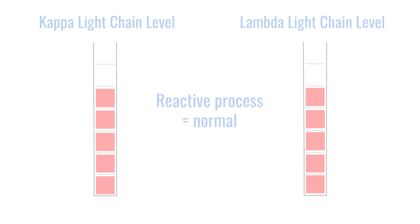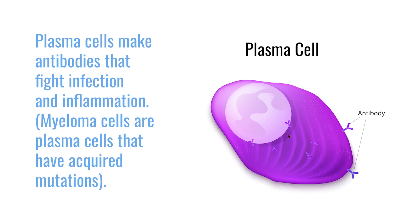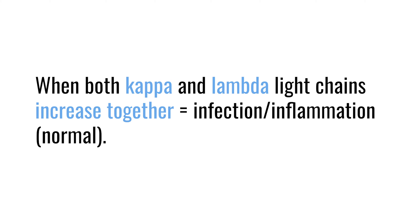Myeloma cells come from an abnormal plasma cell, and a plasma cell is very important for our immune system. It's going to react whenever we have an infection or are exposed to an agent like an allergen or inflammation. Its behavior is to increase the amount of antibodies it produces to try to identify bacteria or pathogens attacking the body. And just like it produces whole antibodies, it also produces fragments of those antibodies, which are the free light chains. So if we see both light chains go up together, that tells us this is more of a reactive or infectious process — not necessarily a cancer.